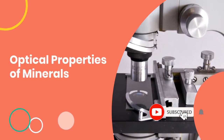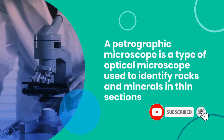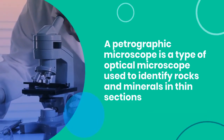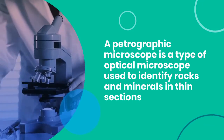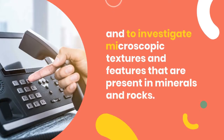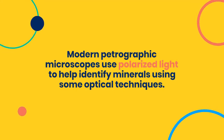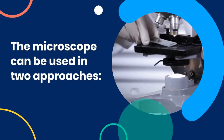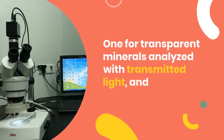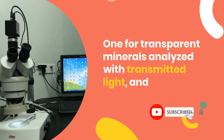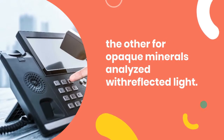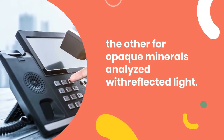Optical Properties of Minerals. A petrographic microscope is a type of optical microscope used to identify rocks and minerals in thin sections and to investigate microscopic textures and features present in minerals and rocks. Modern petrographic microscopes use polarized light to help identify minerals using optical techniques. The microscope can be used in two approaches: one for transparent minerals analyzed with transmitted light, and the other for opaque minerals analyzed with reflected light.